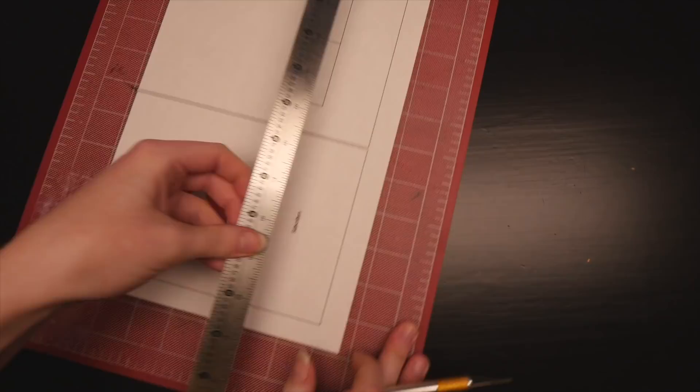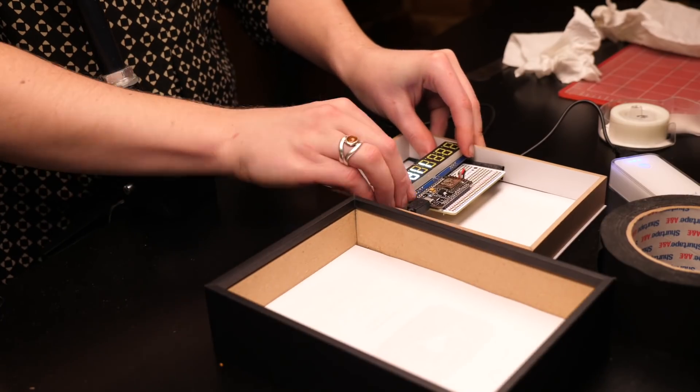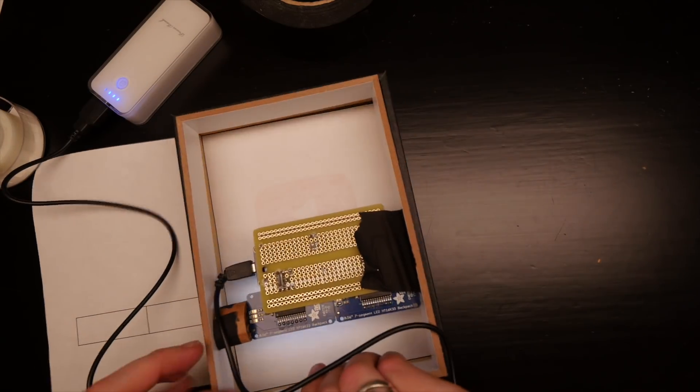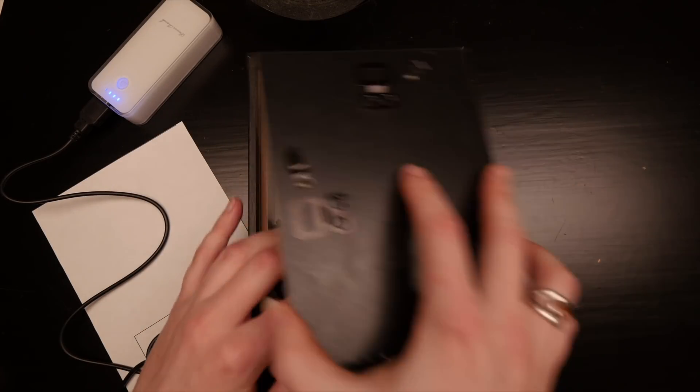Anyway, I scaled up my template and cut it out, using this other piece to help with display positioning. Everything just barely fits into the shadow box, with a little scrap cardboard as compression padding to get the display pressed up against the glass.